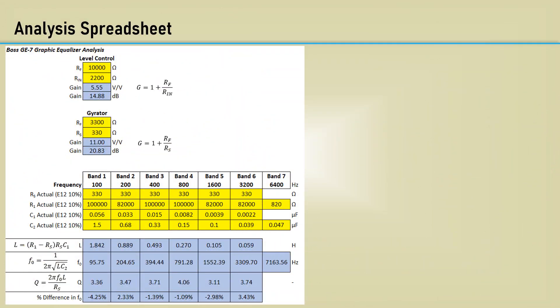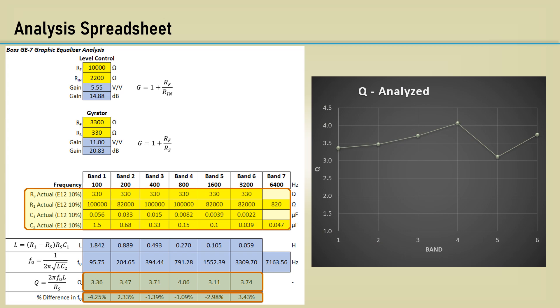I used a spreadsheet to analyze all the bands inputting the relevant resistor and capacitor values. Notice the percent difference between the calculated center frequencies and the nominal center frequencies are within a few percent, but the most interesting thing is a significant variation in Q across the bands. You would think the Q would be the same for each band. This chart shows the variation with the Q at 800 Hz being 4.06 and the Q at 1600 is down at 3.11.